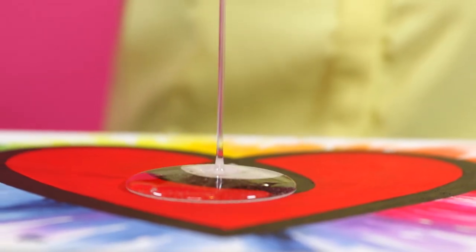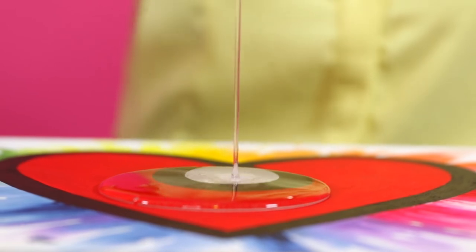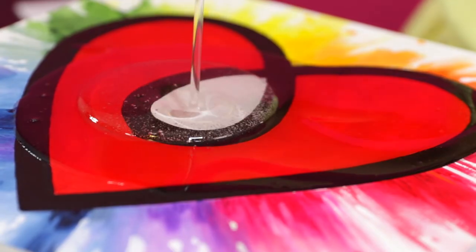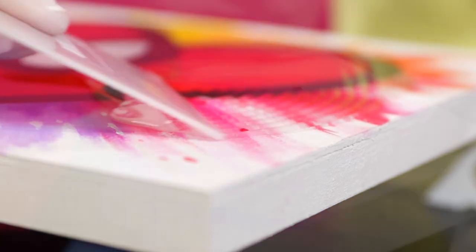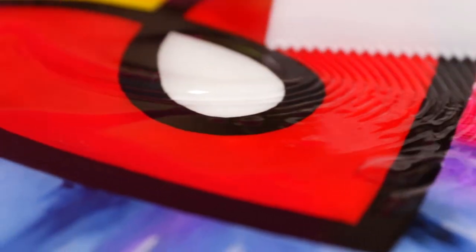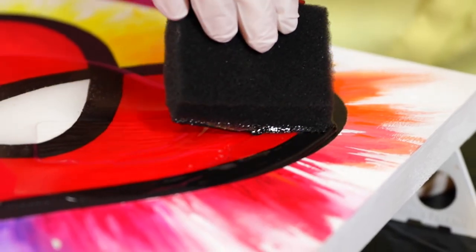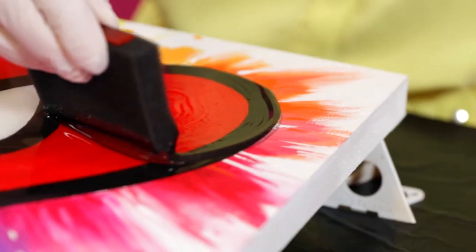Pour and spread the art resin as you see fit. If you intend to coat the entire piece, start by pouring in the center. Use a spreader to guide it exactly where you want it to go, or you can use a disposable brush to embellish only certain areas of your piece.